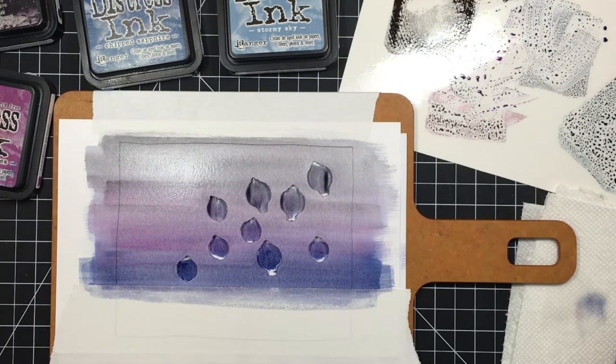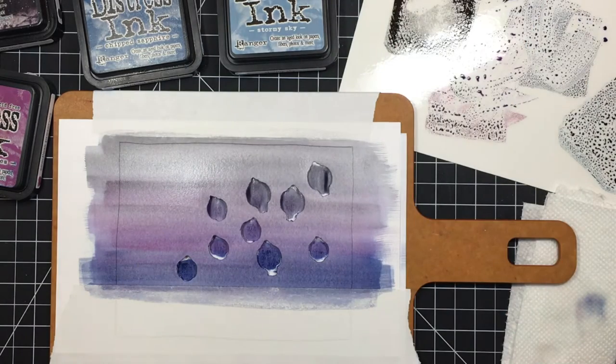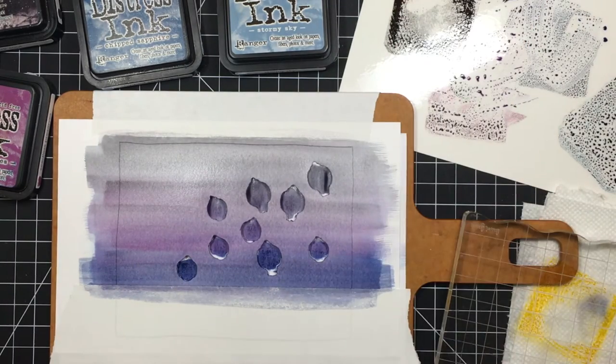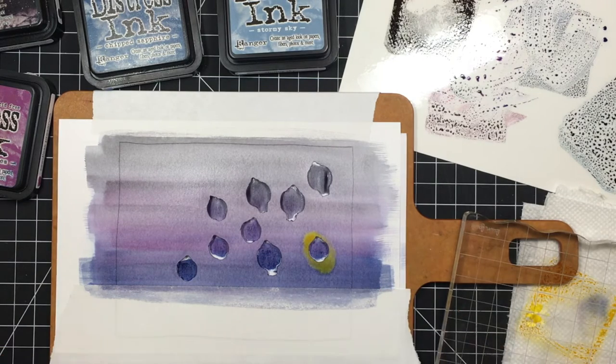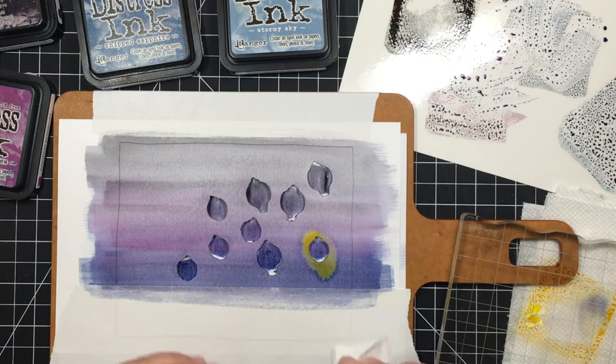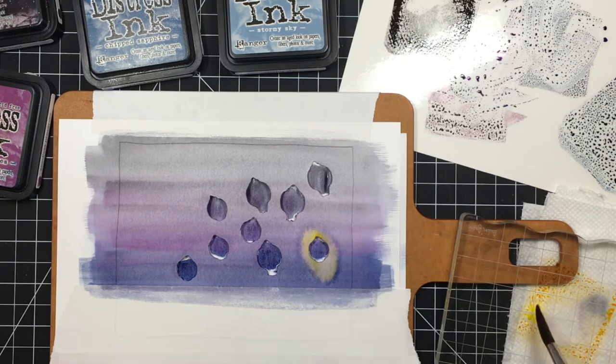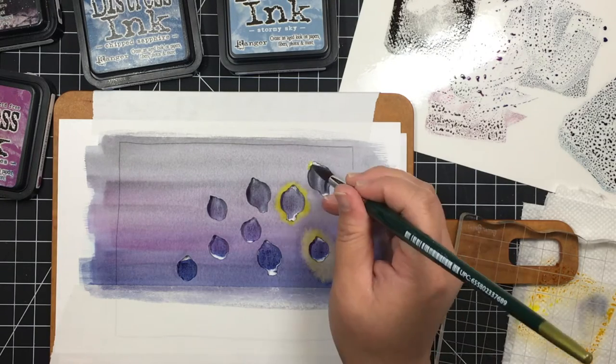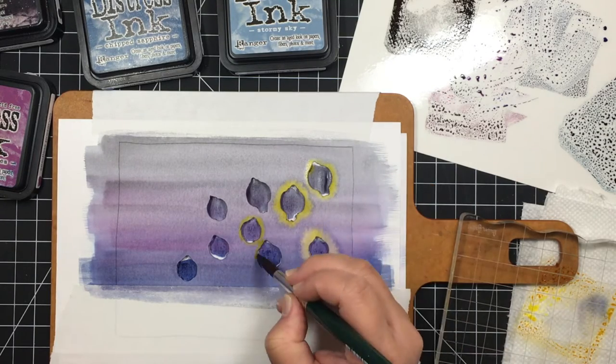While the paper is still wet I drop in mustard seed distress ink around the lantern holes to create a soft halo. Unfortunately I used way too much water for the first lantern but I blotted up most of it with a paper towel and was able to disguise the rest of it later with my sentiment.